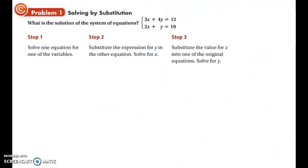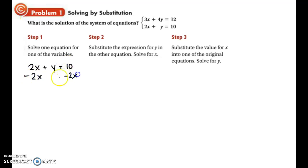In example one, we're going to be using substitution to solve the given system of equations. We have the two equations 3x plus 4y equals 12, and 2x plus y equals 10. The first thing we want to do is solve one of the equations for one of the variables. The second equation has a coefficient of 1 in front of the y, which means that this is the easiest variable to isolate. So I'm going to take this equation and isolate y by subtracting 2x to the other side. So now I have y equals negative 2x plus 10.